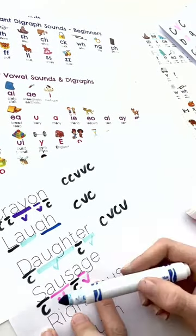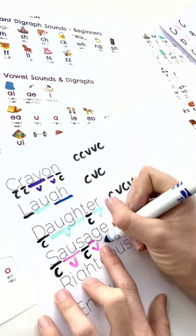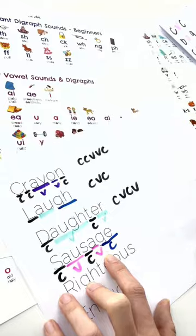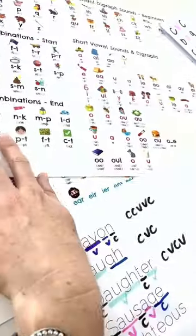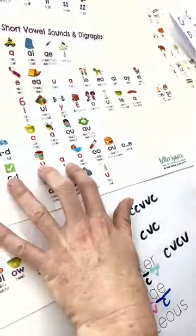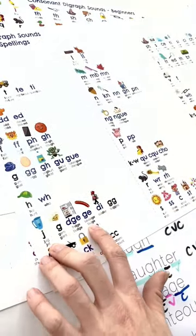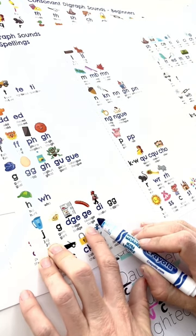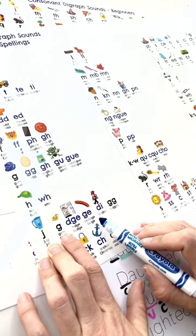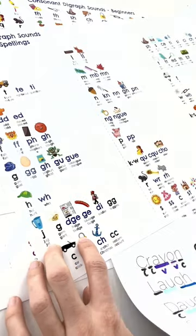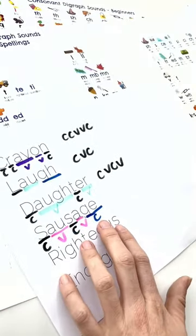And J, sausage, J, this here is our consonant digraph, which is, here we go, J, so sausage, bulge, same as fridge, budge, gem, giant, jug, jet, it's the J sound.